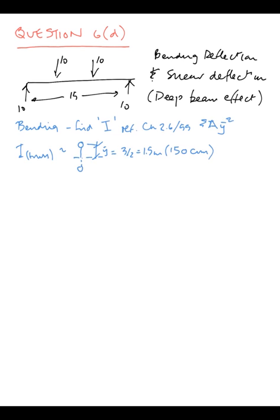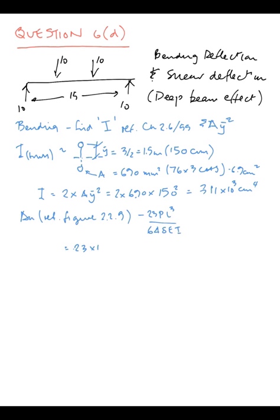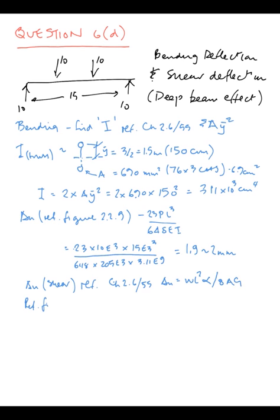So in bending, we work out equivalent I value, summation of A Y bar squared. We've got 3 over 2's depth over 2, which is Y bar, give an I. Then 23 PL cubed over 6,480 I's deflection. Filling in the figures for bending, we come out with 2 millimetres.